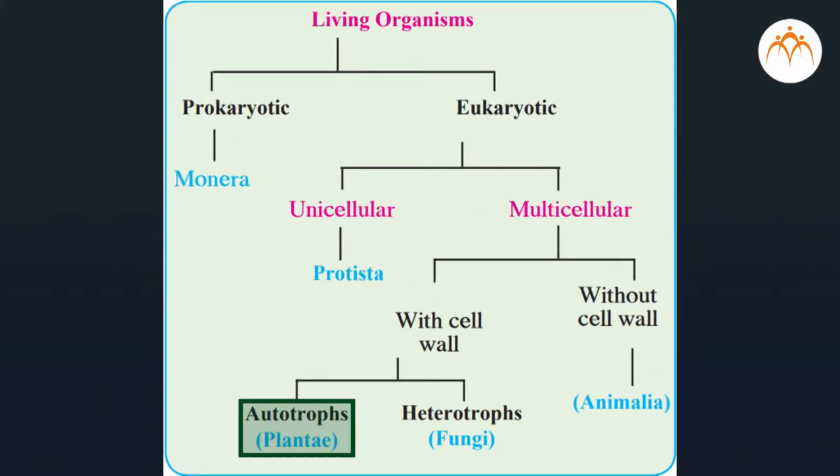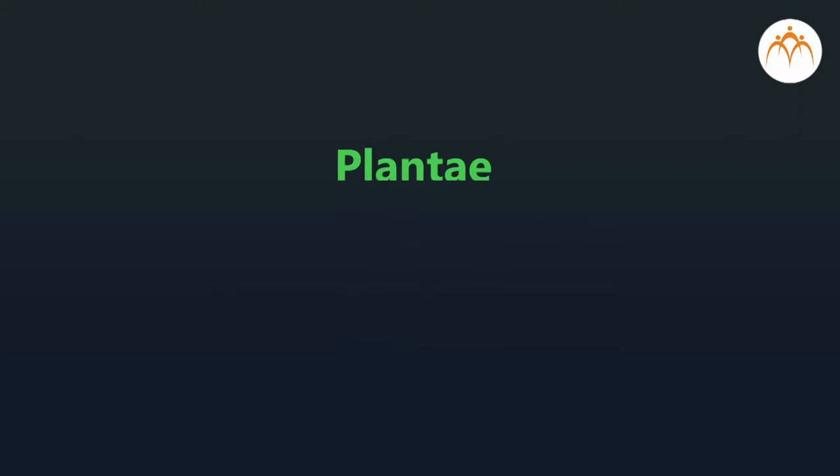How can we further divide the plants into more categories so that we understand them better? Can we have some checklist to differentiate between different types? We can also check for common characteristics and group them together. We can check if they bear seeds, what type of tissue is present for conduction of water and food, what type of seeds do they bear, and so on.